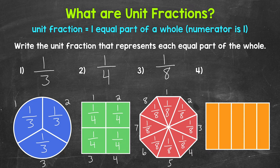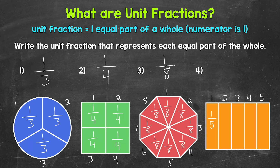Moving on to number four, let's see how many equal parts this whole rectangle has been divided into — one, two, three, four, five. Each equal part is one out of five total equal parts. Our unit fraction here is one-fifth. Each of the five equal parts is one-fifth of the whole. So one-fifth is the unit fraction that represents each equal part of the whole.